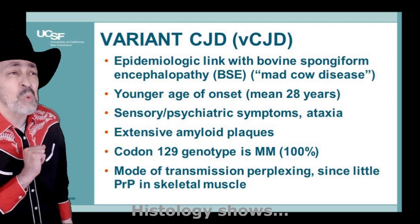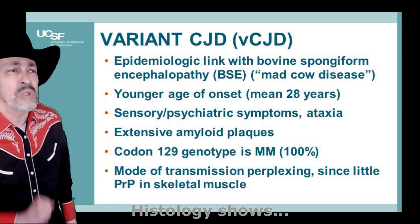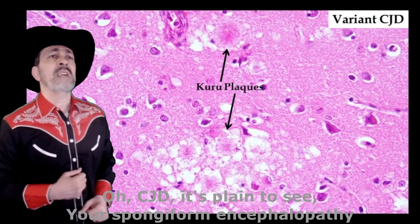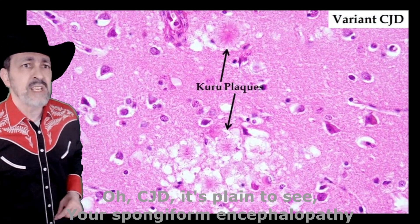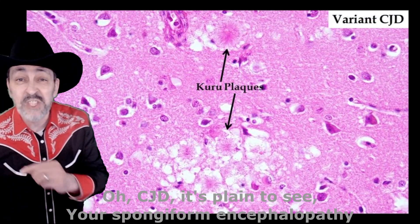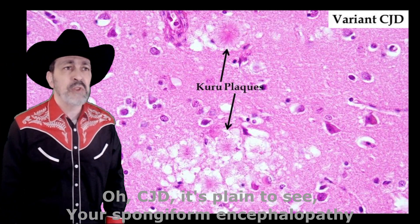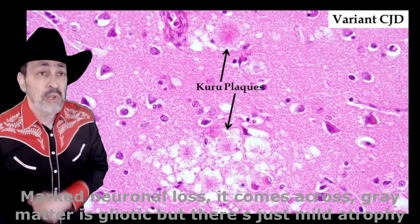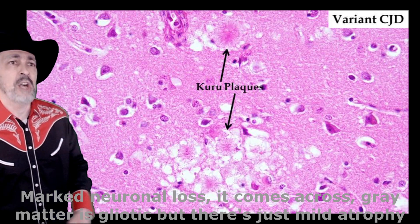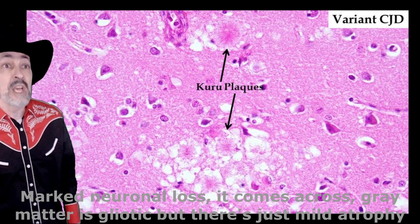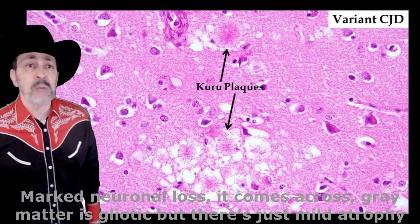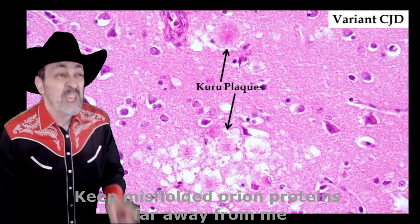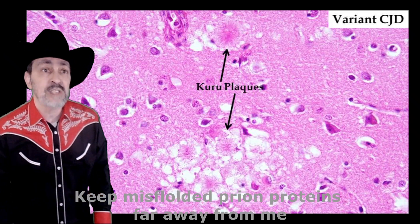Histology shows CJD — it's plain to see. CJD: spongiform pattern, neuronal loss. Brain matter is spongiform, but there's just mild atrophy. Keep misfolded prion proteins far away from me.